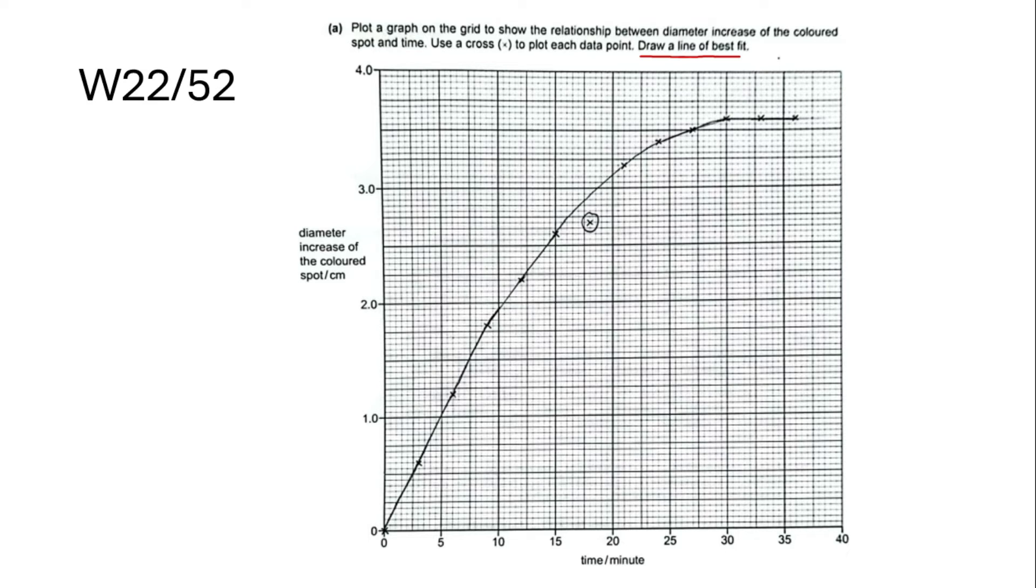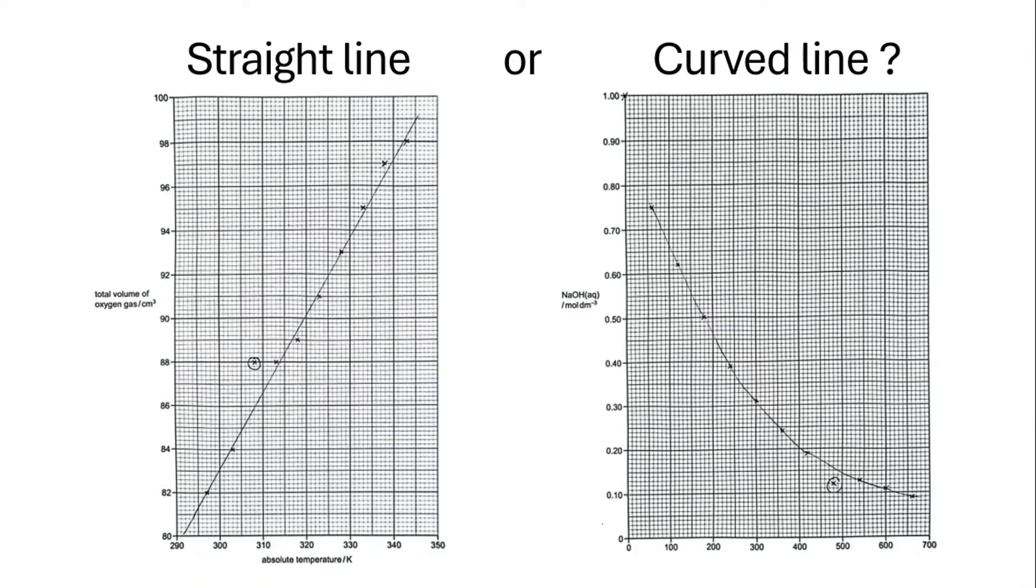So I think the best way is actually to get to the fundamental. We need to know that a line of best fit can be a straight line or a curved line, because they are both lines. So the meaning of line of best fit is actually a line which goes through most of the points. Chemistry paper 5 is designed to have one most anomalous point. I've only seen one time in summer 2014 that a graph has two anomalous points. Other than that, all the data given in paper 5 will lead us to a line with only one most anomalous point.